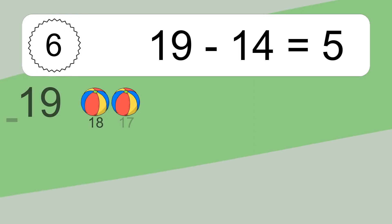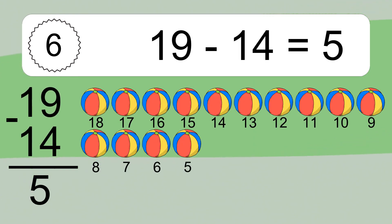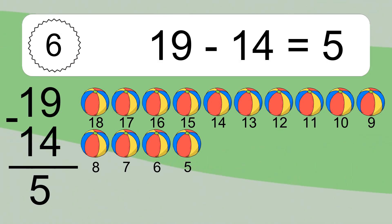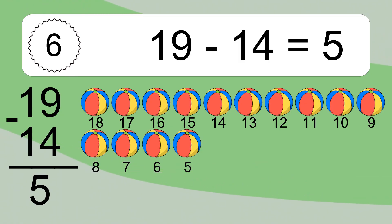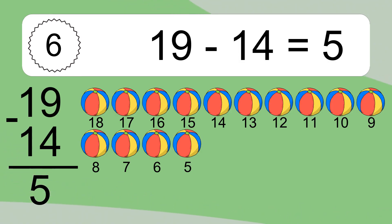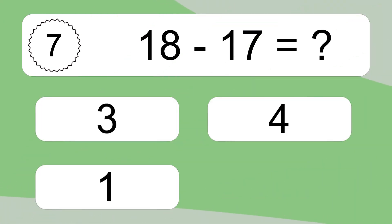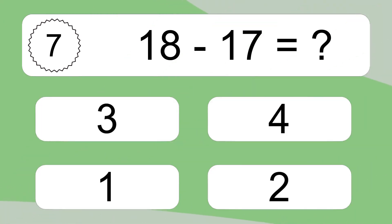19 minus 14 equals what? 19 minus 14 equals 5. Let's count it: 18, 17, 16, 15, 14, 13, 12, 11, 10, 9, 8, 7, 6, 5.